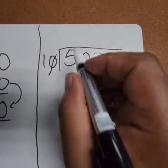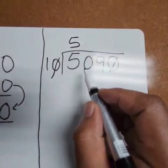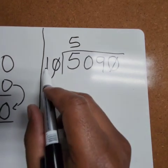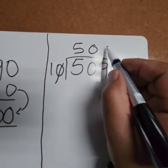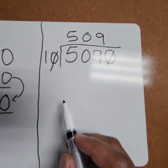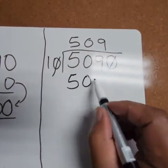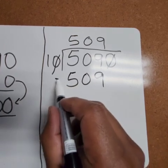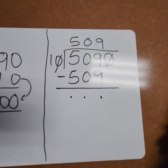You say, how many ones does five have? How many ones does zero have? And how many ones does nine have? Then you multiply. You subtract. And we are done.